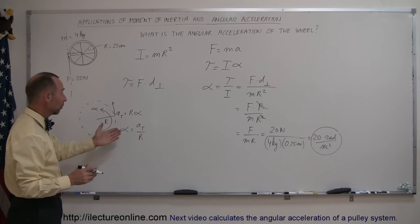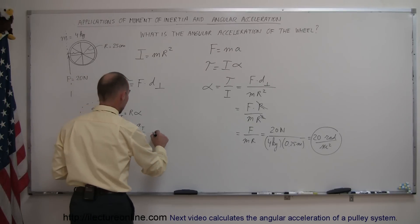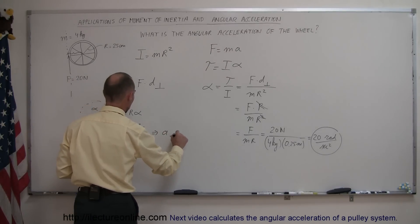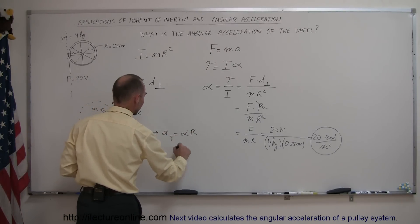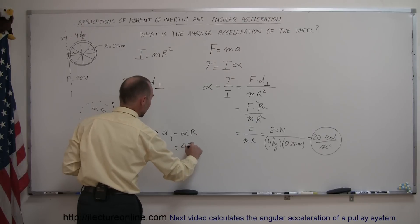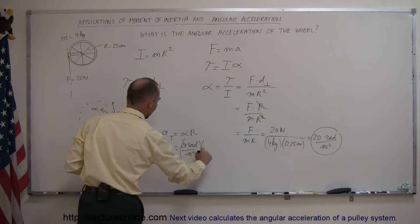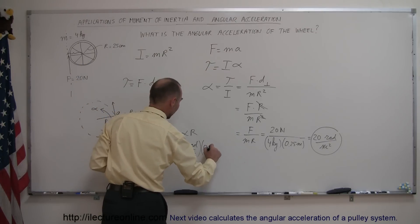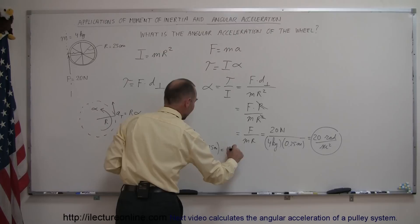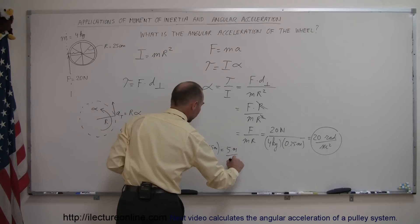If you want to find the tangential acceleration, then we go here and we say, okay, that means that the tangential acceleration is alpha times r, which is equal to 20 radians per second squared times the radius of this, which is 0.25 meters, so that would be 5 meters per second squared.